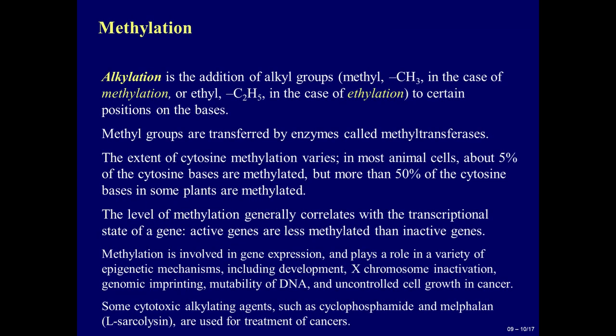Methylation. Alkylation is the addition of alkyl groups — methyl (CH3) in the case of methylation, or ethyl (C2H5) in the case of ethylation — to certain positions on the bases. Methyl groups are transferred by enzymes called methyltransferases. The extent of cytosine methylation varies. In most animal cells, about 5% of the cytosine bases are methylated, but more than 50% of the cytosine bases in some plants are methylated.